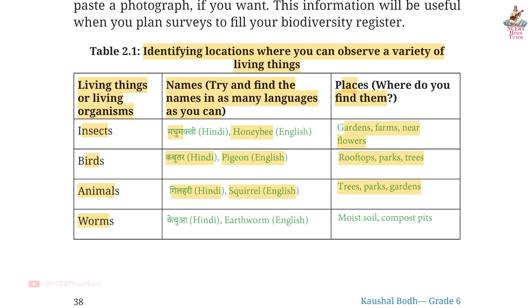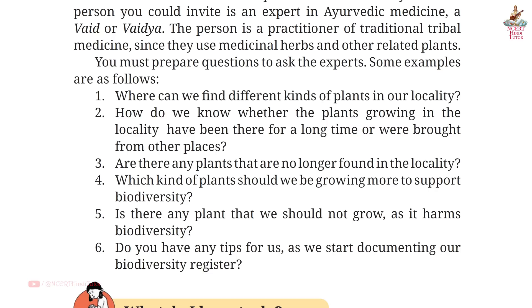Worms — Names: Hindi: Earthworm in English. Places where you find them: Moist Soil, Compost Pits. Page 39.